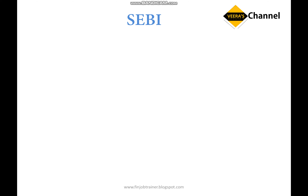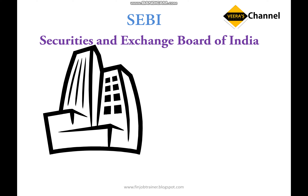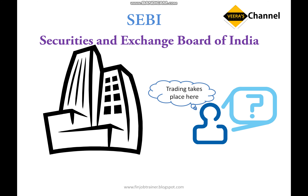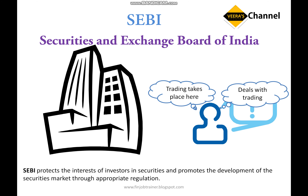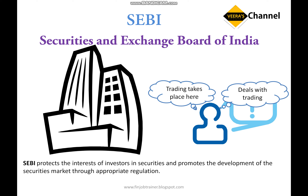In a similar way, we have another organization called SEBI. What is SEBI and what does it do? The full form of SEBI is Securities and Exchange Board of India. If you think SEBI deals with trading, you are completely wrong. Similar to RBI, SEBI controls and regulates the Securities Market. The formal definition is: SEBI protects the interests of investors in securities and promotes the development of the Securities Market through appropriate regulation.